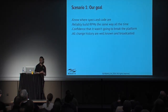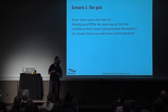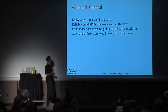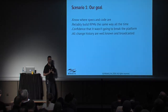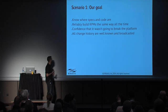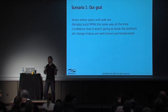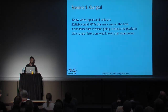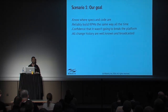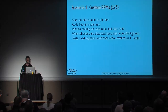Our goal was to know where the specs and the code are — tracked, version controlled, with all the history. We wanted to reliably build the same RPMs the same way all the time, with confidence it wasn't going to break the platform. All change history well-known, and all the events of rolling out and building broadcast. So we started a mini CICD process — simple, doesn't involve Gerrit or code analysis tools, but it worked out pretty well.